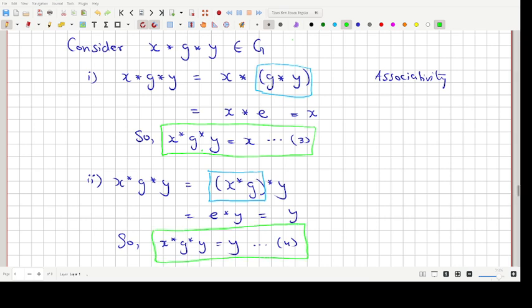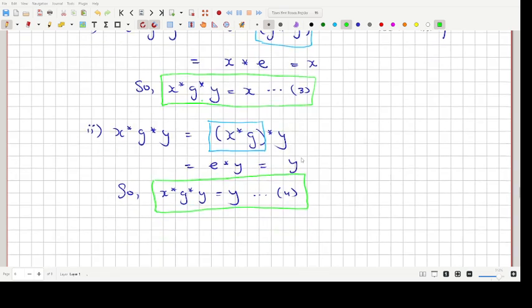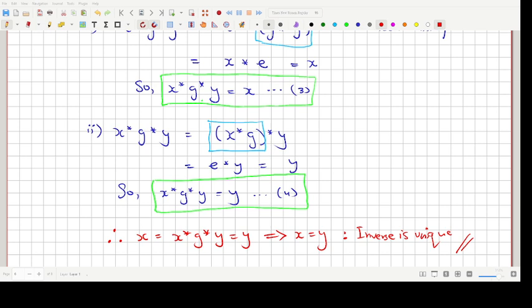Now, we know that the left-hand side in equation 3 and equation 4 are exactly the same. So, therefore, X star G star Y equals Y implies that X equals Y. So, this says that the inverse is unique, correct? And that, my friends, has ended this beautiful, simple proof that the inverse element is unique. There's just one inverse for each and every element.